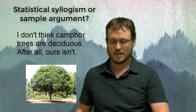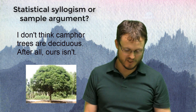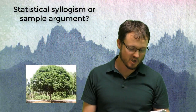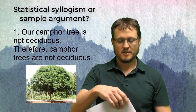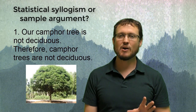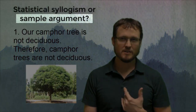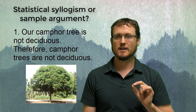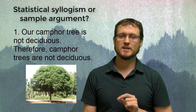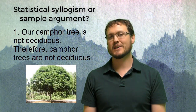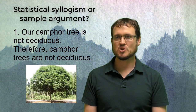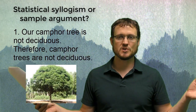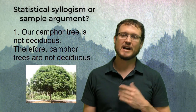This would be a sample argument. The premise is 'ours isn't' — they're using their own tree as evidence for the broader claim that they don't believe camphor trees are deciduous. The phrase 'after all' is a premise indicator. Writing it out formally: Premise — our camphor tree is not deciduous; Conclusion — camphor trees are not deciduous. It's clearly a sample argument because it uses a specific case to make a broader claim about all camphor trees.